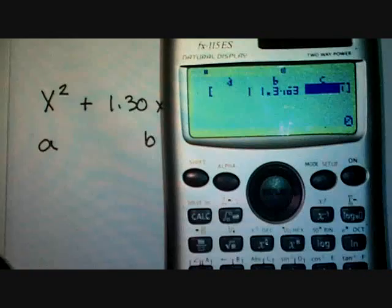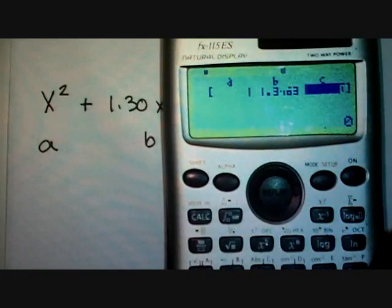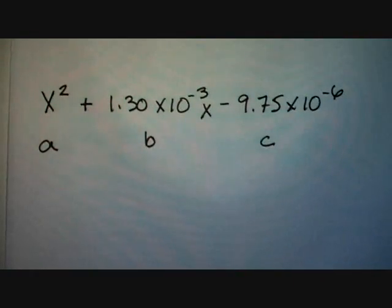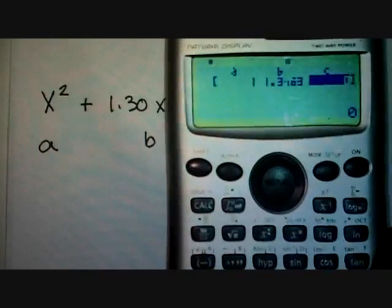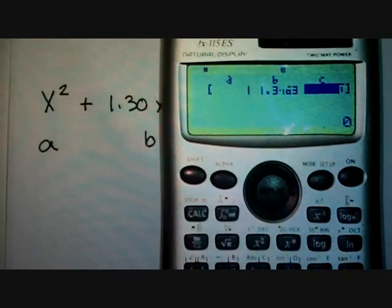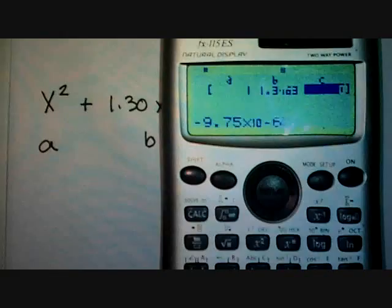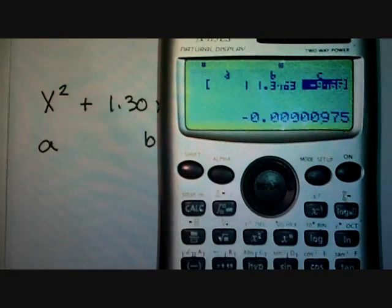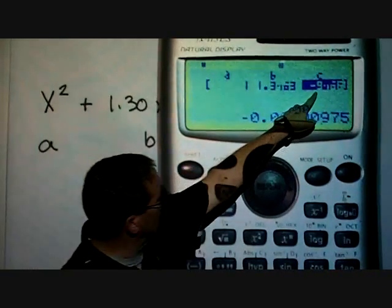Now we'll do it for C. C in this case was -9.75 × 10⁻⁶. So we'll input -9.75 × 10⁻⁶. And you'll notice that value is now in for C.